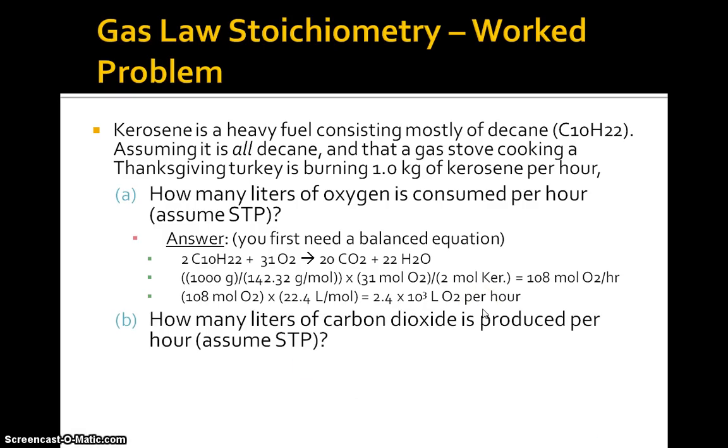How many liters of carbon dioxide is produced per hour, assume STP? Answer. Okay. 1,000 grams divided by 142.32. This is liters of carbon dioxide produced. So we have to get the number of moles of CO2 produced. And if you look back here, we have 20 moles of CO2 for every two moles of C10H22 burned. And our stoichiometric ratio is here.